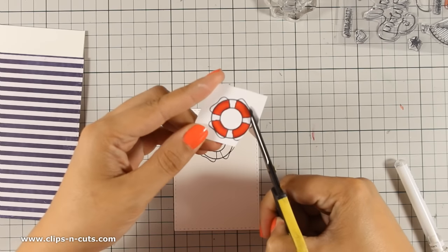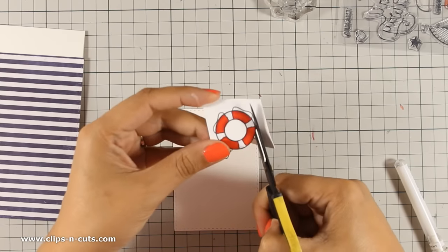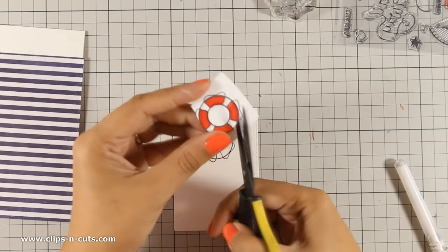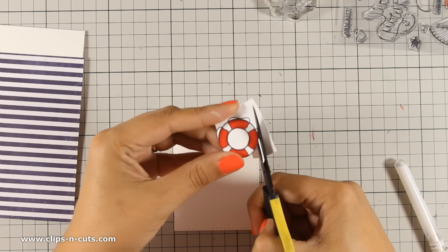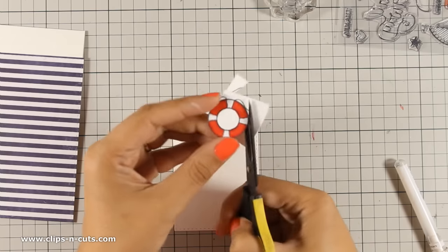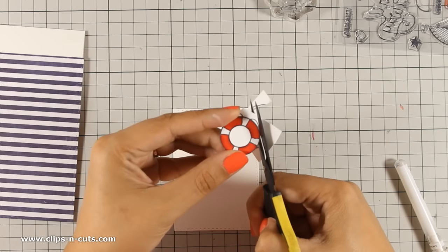This way I can use foam squares at the back of the lifesaver to add a little bit of dimension on my card, while at the same time I won't be losing any of the details or all those black lines around the lifesaver.